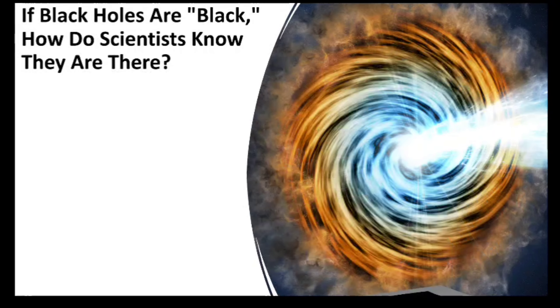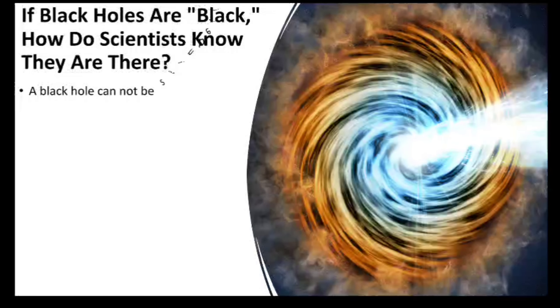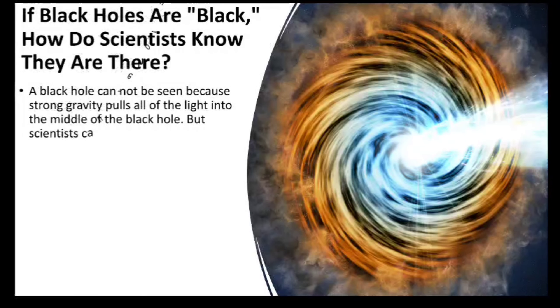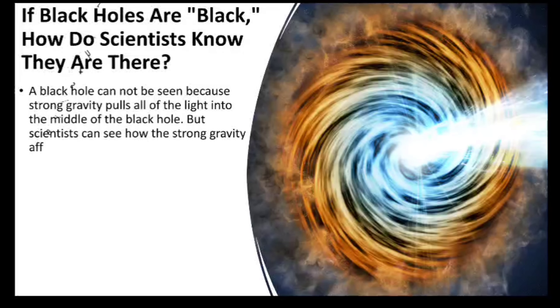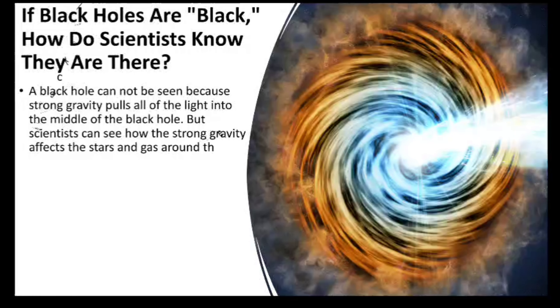If black holes are black, how do scientists know they are there? A black hole cannot be seen because strong gravity pulls all of the light into the middle of the black hole. But scientists can see how the strong gravity affects the stars and gas around the black hole.